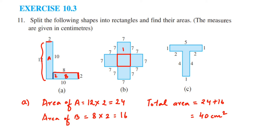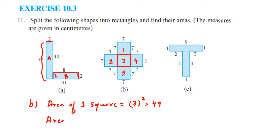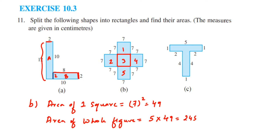If all the sides are 7, you can see there are five squares — 1, 2, 3, 4, 5. So we're going to find the area of 1 square and multiply by 5 to get the whole area. Area of 1 square equals side into side, so 7 into 7 equals 49. We have 5 such squares, so area of the whole figure equals 5 into 49, which gives us 245. So 245 cm² is the answer for the second question.